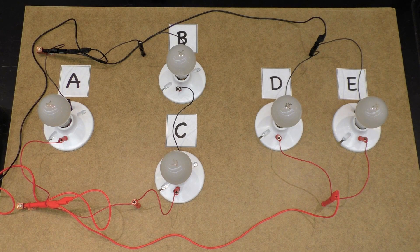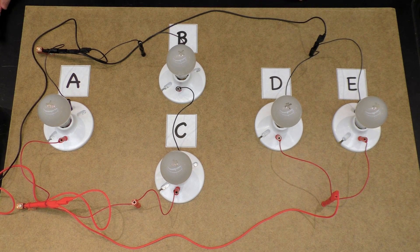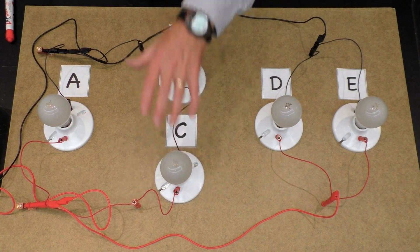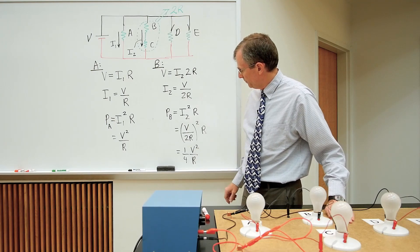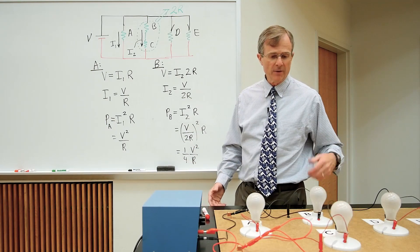A, D, and E all get the full voltage across them whereas B and C only get part of the voltage and hence dissipate less power and are less bright.